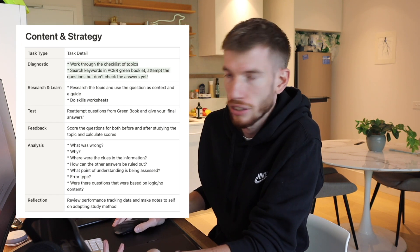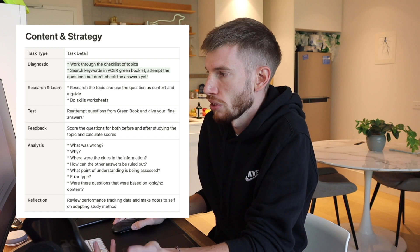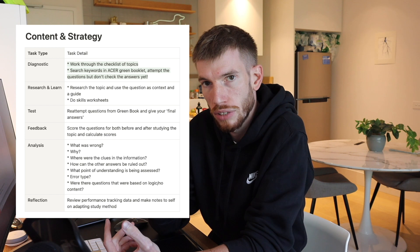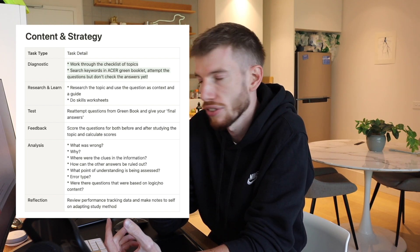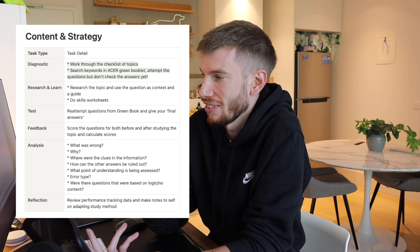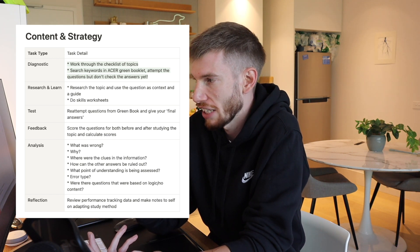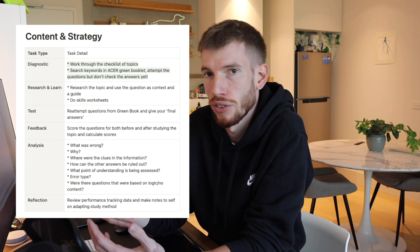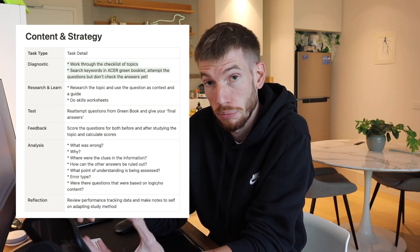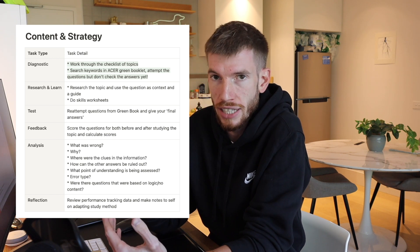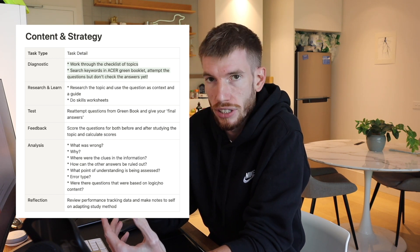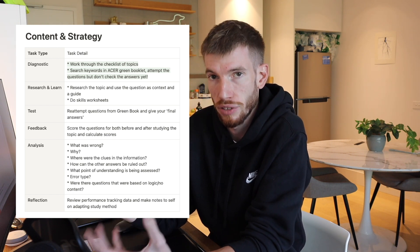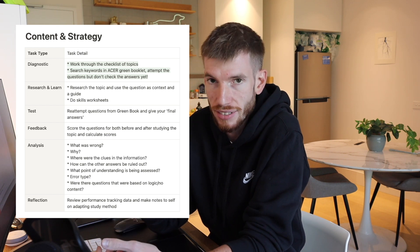The first thing you do is start with diagnostics — work through the checklist of your topics. Then as you're going through them, search the keywords in the ACER material. Get access to all of those PDFs and do it the official way. I've suggested maybe just the green booklet. It obviously isn't going to cover everything, but the green one covers a lot more content-based stuff and it's actually a good place to start. Search the keywords — it'll pull up questions related to that topic. You can attempt them just to see what you can glean from logic or prior knowledge. Don't check the answers yet.